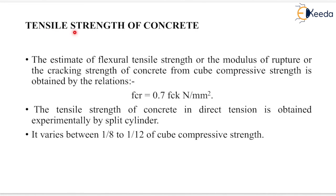Now we will study tensile strength of concrete. The estimate of flexural tensile strength, or the modulus of rupture, or the cracking strength of concrete from cube compressive strength is obtained by: fcr = 0.7 √fck in Newton per mm square. The tensile strength of concrete in direct tension is obtained experimentally by the split cylinder test, and it varies between 1/8 to 1/12 of cube compressive strength.